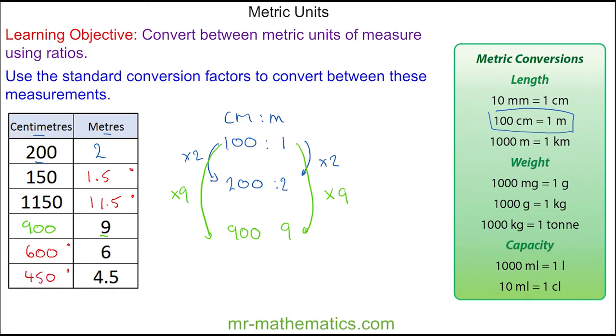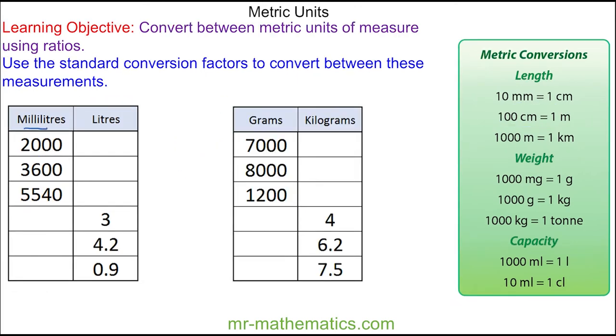OK, let's move on to two more questions. Now we're going to convert between millilitres and litres, which we can do using this conversion, which again we can write as a ratio between millilitres to litres. And we know 1,000 millilitres is the same as 1 litre.